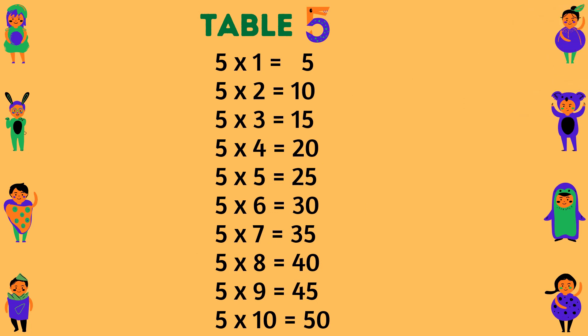Table of 5. 5 times 1 equals 5. 5 times 2 equals 10. 5 times 3 equals 15. 5 times 4 equals 20. 5 times 5 equals 25. 5 times 6 equals 30. 5 times 7 equals 35. 5 times 8 equals 40. 5 times 9 equals 45. 5 times 10 equals 50.